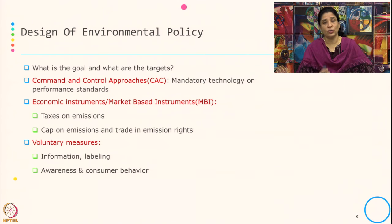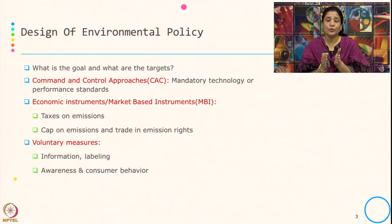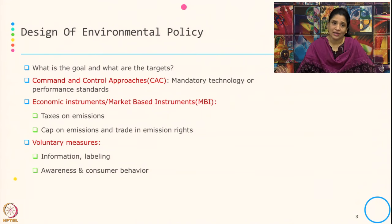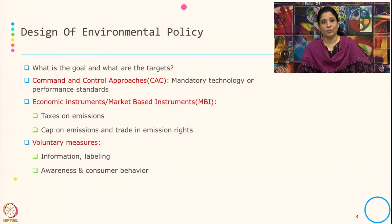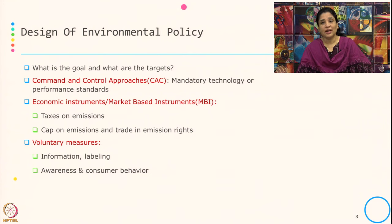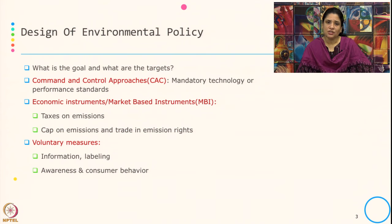If the targets are not being met, or if they are being met, how to control or monitor that comes under the second part of the instrument. Command and control approach is also typically known as the traditional approach — one of the first approaches in environmental regulation — which prescribes mandatory technology and performance standards to organizations. The second type of policy instrument is the economic instrument or the market-based instrument.